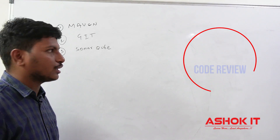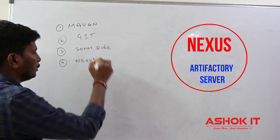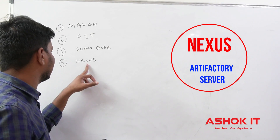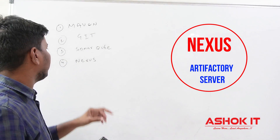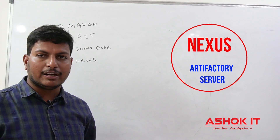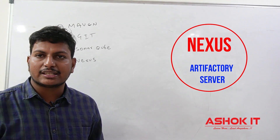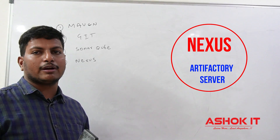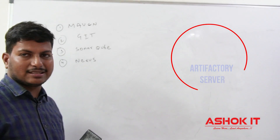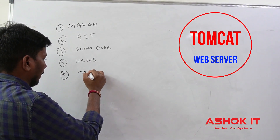The next one is Nexus. Nexus we are going to use as an artifact server. Project build files we are going to store in the Nexus repository. When we compile and package our project using Maven, it generates a JAR file or WAR file, and that JAR or WAR we can store in the Nexus repository. Project shared libraries — common libraries available for multiple projects — can also be maintained in the Nexus repository.